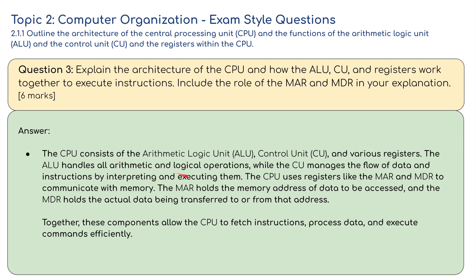Finally, the CPU consists of the arithmetic logic unit, the control unit, and various registers. The ALU handles all arithmetic and logical operations, while the CU manages the flow of data and instructions by interpreting and executing them. The CPU uses registers like the MAR and the MDR to communicate with memory. The MAR holds the memory address of data to be accessed, and the MDR holds the actual data being transferred to or from that address. Together, these components allow the CPU to fetch instructions, process data, and execute commands efficiently — which is all part of the fetch, decode, and execute cycle.